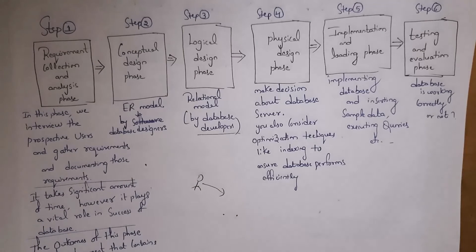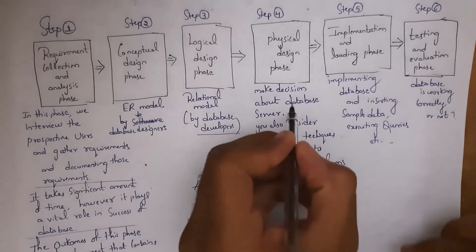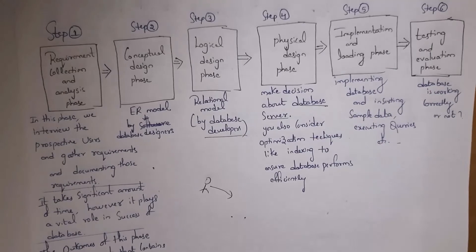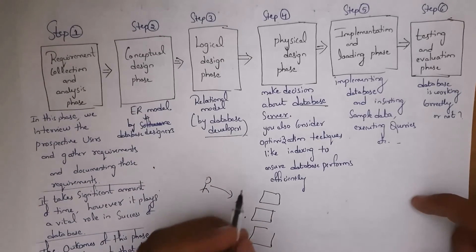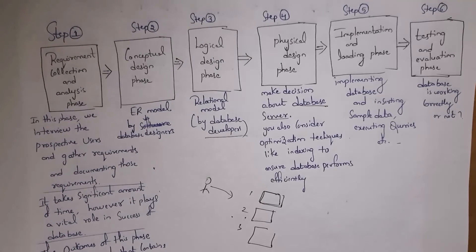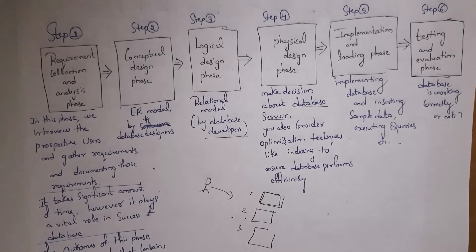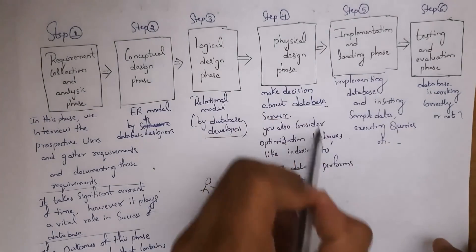The fourth phase is the physical design phase. Here we make decisions about the database server — for example, in which location we need to store the database server. We also perform optimization techniques. For instance, if a developer has 10 tables, we assign an index number to each table so that using that index number we can easily access the tables, which improves database performance.